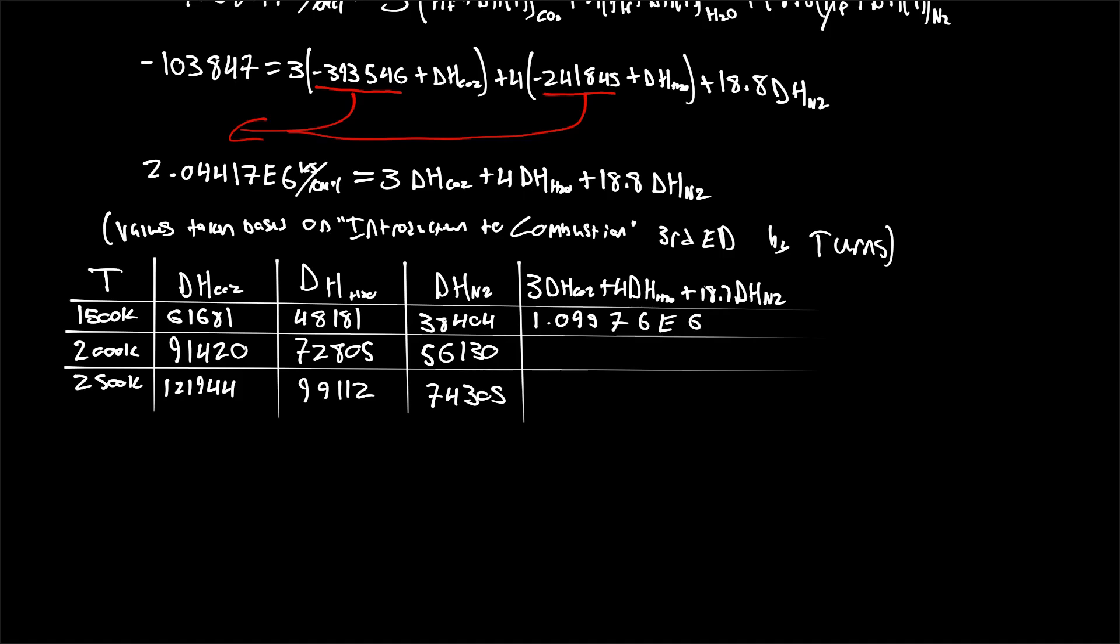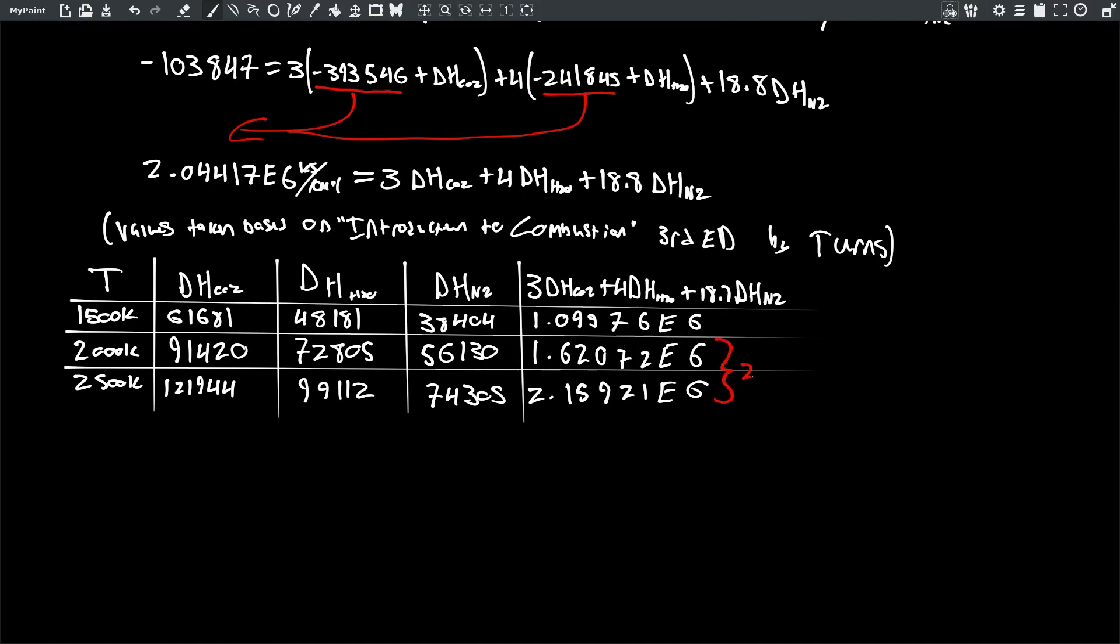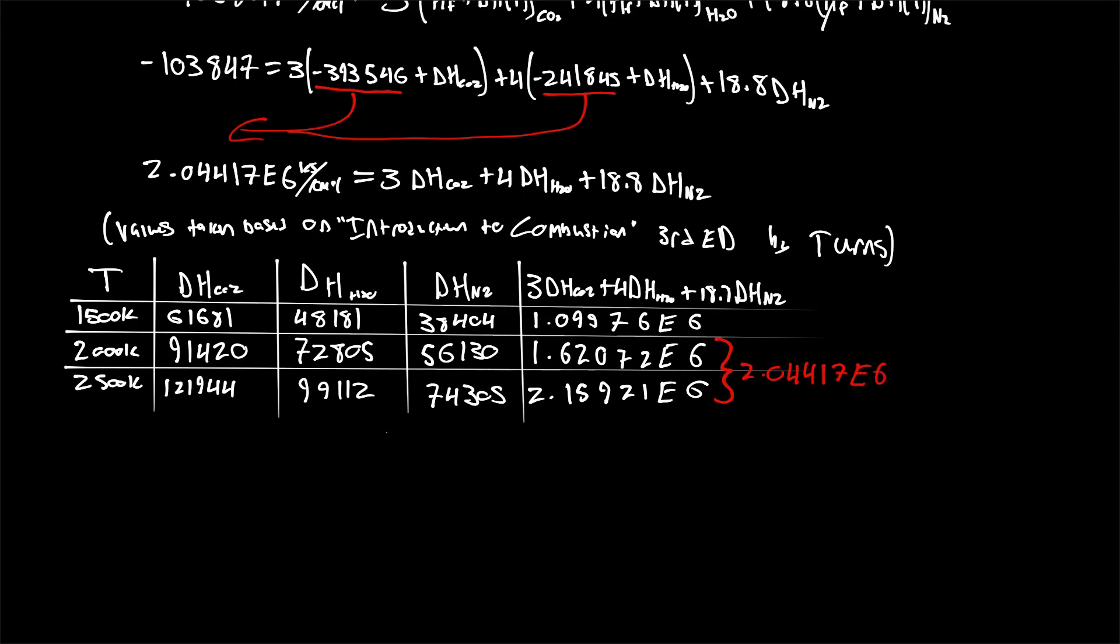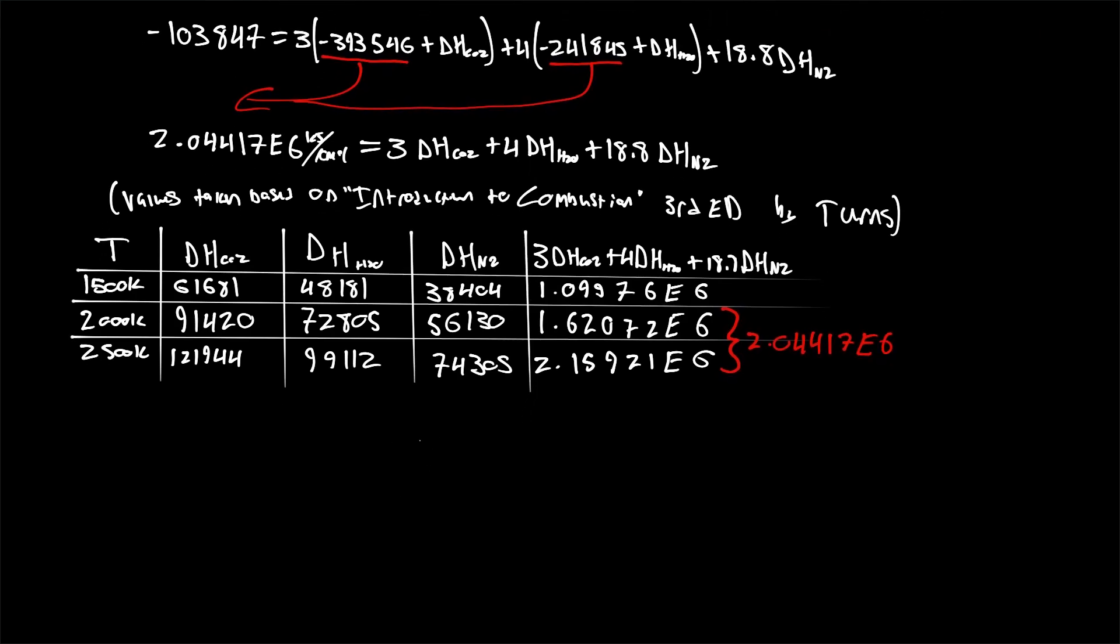So noting that we need the left-hand side to be equal to the right-hand side, therefore we're looking for this number 2.04417 times 10 to the 6. We know that that's going to be somewhere in between these last two. Therefore, we can just do a simple linear interpolation to calculate approximately where the adiabatic flame temperature should lie.